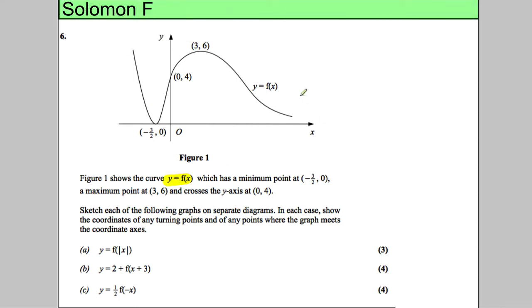In this question we've got a curve y equals f of x, and we're told that it's got a minimum point at negative 3 over 2, 0. We're also told that it's got a maximum point at 3, 6, and we're told it crosses the y-axis at 0, 4.